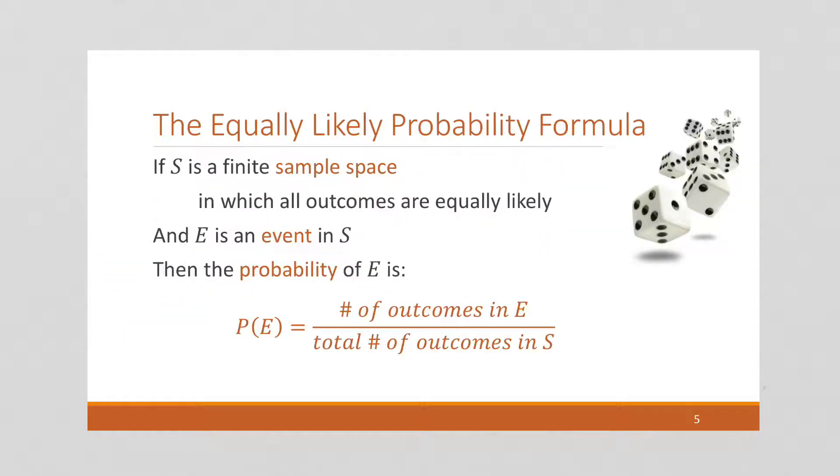So what we used to calculate the probability of having a functional antenna array is sometimes called the equally likely probability formula. And this occurs when we have a finite sample space, right? We have S, a finite sample space, in which all the outcomes are equally likely. That's really important. If some outcomes are more likely than others, then this won't work. But this is kind of like flipping a coin. If there's equal likelihood, we can use this probability formula. E is an event in S, so we can calculate the probability of E as the number of outcomes in E over the total number of outcomes in S. And this is sometimes written as the size of E over the size of S. This is the probability of that event occurring.